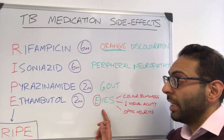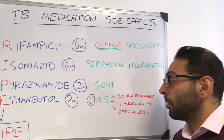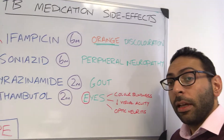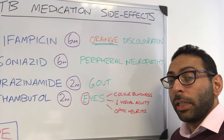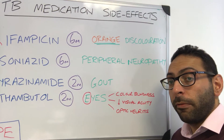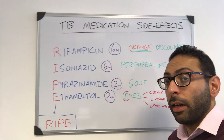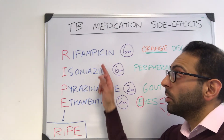For Ethambutol, remember E goes with E — lots of eye problems. A couple of things like colour blindness, decreased visual acuity, and optic neuritis. There are quite a few eye problems that go with Ethambutol.